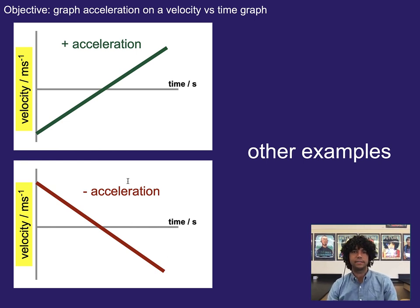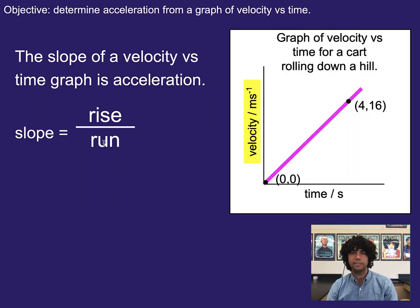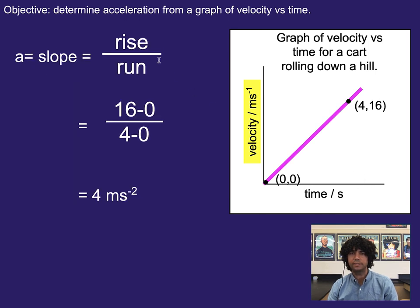So the steepness of the graph tells you the acceleration, which brings me to the idea that we can actually calculate acceleration based on the slope. If slope is rise over run, and our rise is in velocity, but our run is in time, then that means that we get acceleration from it. We can look at a change in velocity going from zero to 16, divided by a change in time going from zero to four. And that gave us an acceleration of four meters per second squared.